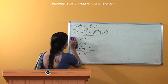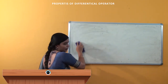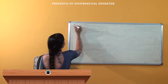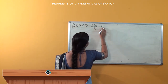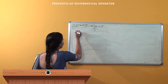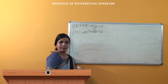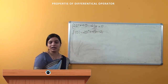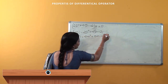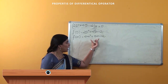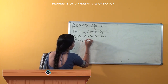Okay, we will solve one problem so that you can understand better. Solve (2D² + 5D - 12)·y = 0. We have to solve this equation. I will consider f(D) = 2D² + 5D - 12. First we have to find the auxiliary equation, so f(m) = 2m² + 5m - 12.